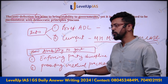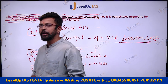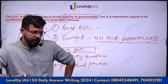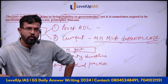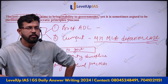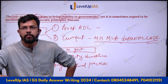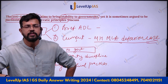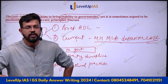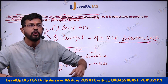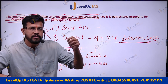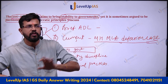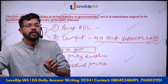For example, in way forward, I have seen many people writing 'implement the recommendation of the Second ARC' — but you have to specify which report, which recommendation. For example, 'ethics in governance' — and even then, what specific recommendation? Try to be specific whenever you are writing; only then will you get marks.